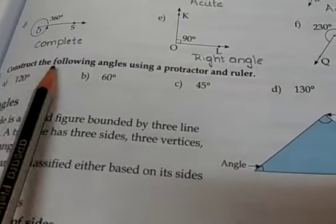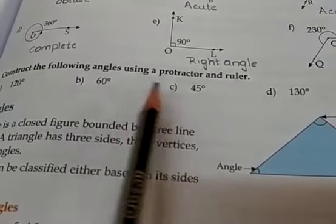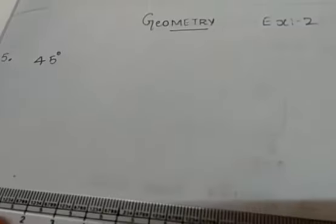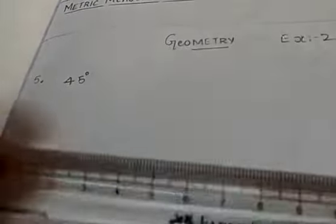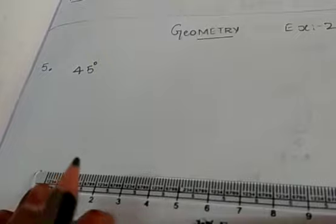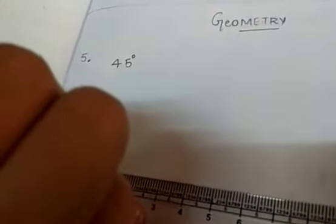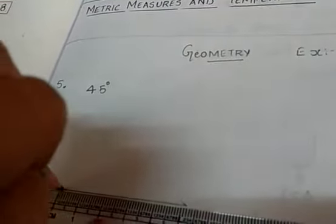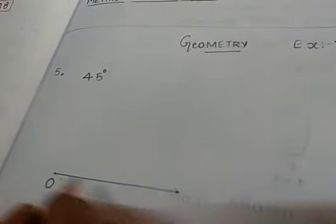Fifth question: construct the following angles using a protractor and ruler. I will do one example and show you — you can do the rest by yourself. I am constructing 45 degrees. With the help of the ruler, place the ruler on the sheet in your classwork and draw a line of any centimeter — that is 5 or 6 cm. Mark the point — that is the origin, the starting point to the ending point. Mark the point and name it O and A.